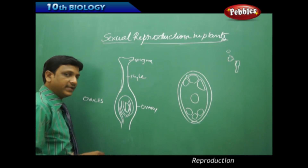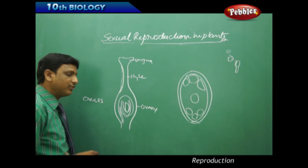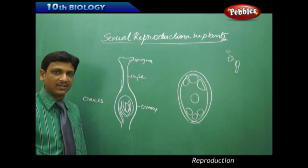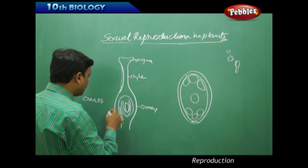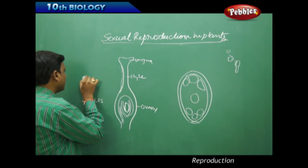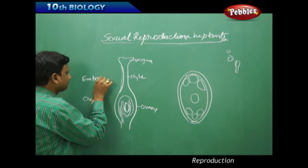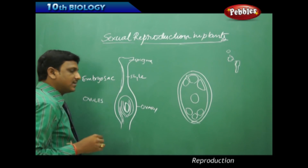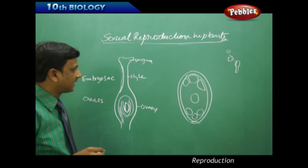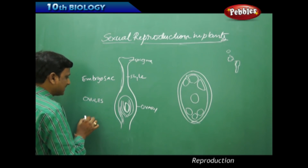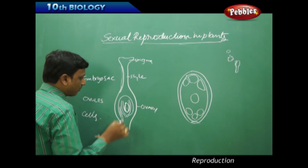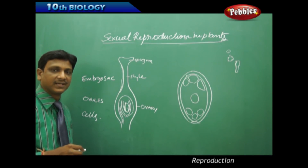The ovule is attached to the ovary. Inside the ovule there are many layers, and at the center of the ovule you can find a small microscopic embryo sac. This embryo sac consists of stored food and water, and it contains gametophytic cells — the reproductive cells are found in this central embryo sac.